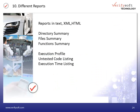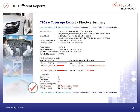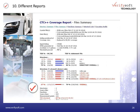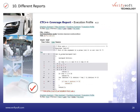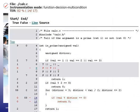TestWell CTC++ has different reports in text, XML and HTML formats. You can see here a summary for a directory, for a file, and more detail for a function. Within the execution profile you can see exactly which tests are missing.